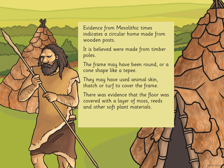Evidence from Mesolithic times indicates a circular home made from wooden posts. It's believed that the houses were made from timber poles. The frame may have been round or a cone shape like a teepee. They may have used animal skin, thatch, or turf to cover the frame. There was evidence that the floor was covered with a layer of green moss, reeds, and other soft plant materials.